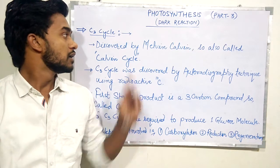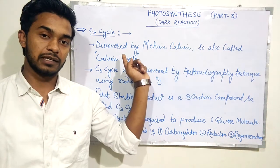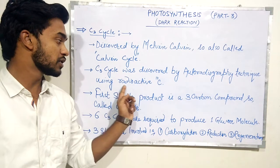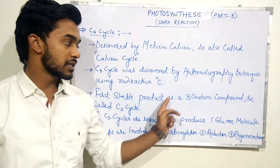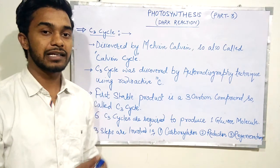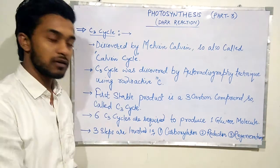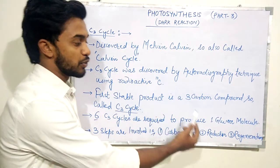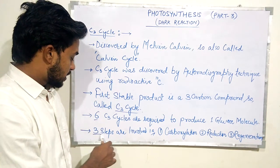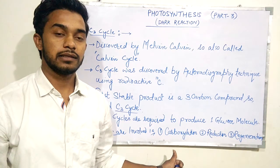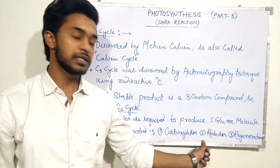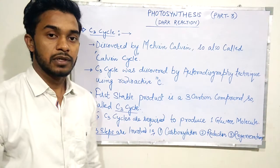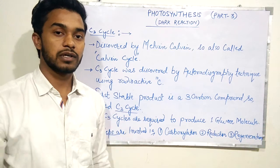The C3 cycle was discovered by Melvin Calvin, so it is also called the Calvin cycle. It was discovered using the autoradiography technique with radioactive carbon-14. The first stable product in the C3 cycle is a three-carbon compound, which is why it is called the C3 cycle. Six C3 cycles are required to produce one glucose molecule, and there are three steps involved: carboxylation, reduction, and regeneration.